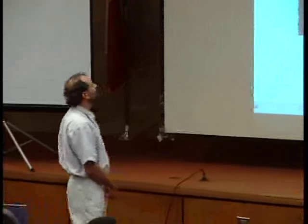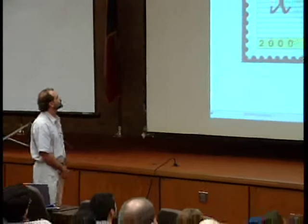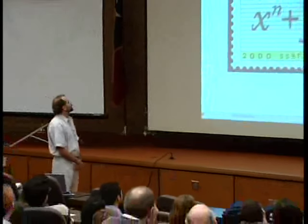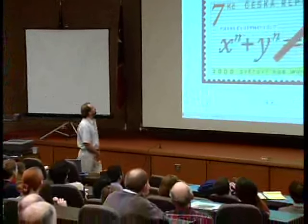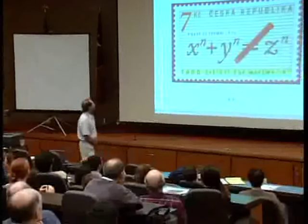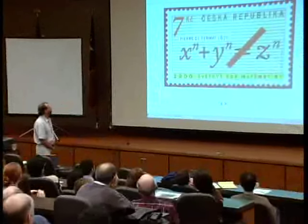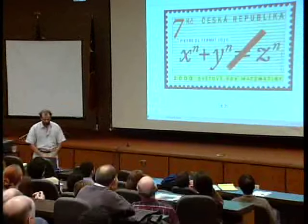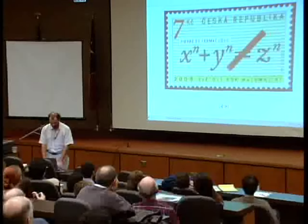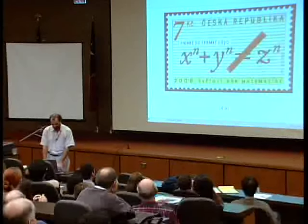Here's Fermat's Last Theorem. It says, in a synthetic way, that there are no integers x, y, and z, not 0, such that they add up in this form, where the exponent n is 3 or more. And this was proved recently, as I'm sure you must have heard, by Andrew Wiles.